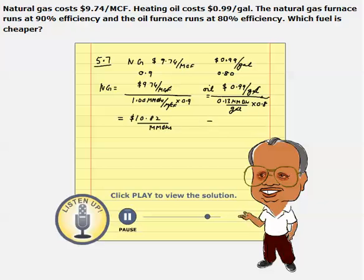So the price works out to be $9.50 per million BTUs. The same million BTUs would cost $10.80 for natural gas, and oil would be $9.50. So oil is cheaper.